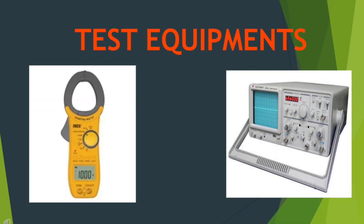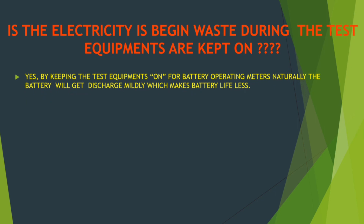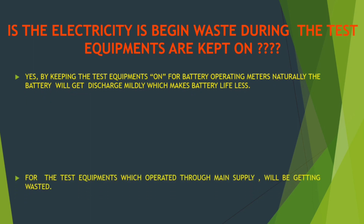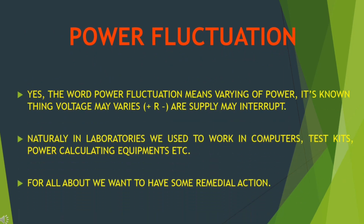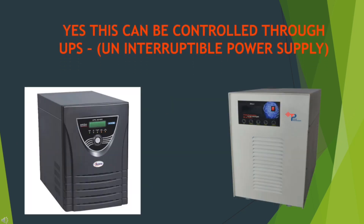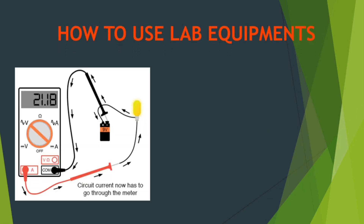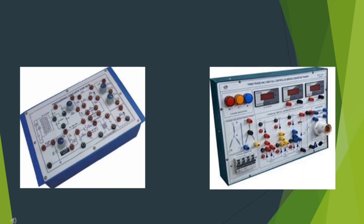In our lab, we should keep the test equipment on only when required. Power fluctuation comes in more categories — power interruption, more or less voltage. For lab work we use computers and test kits; we want a constant supply, which we can get by UPS.